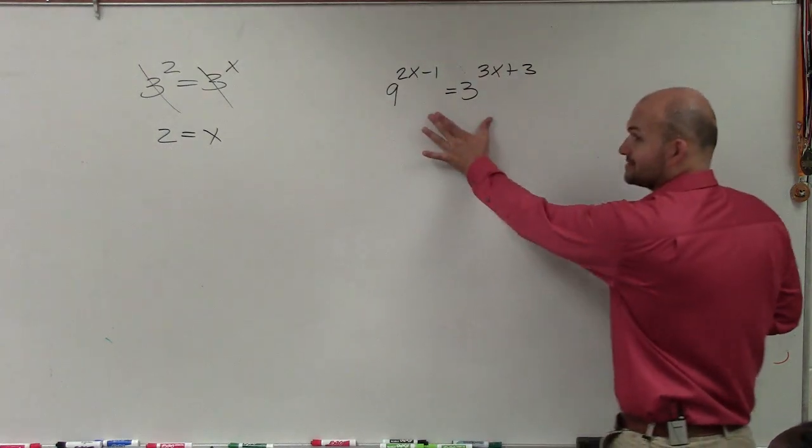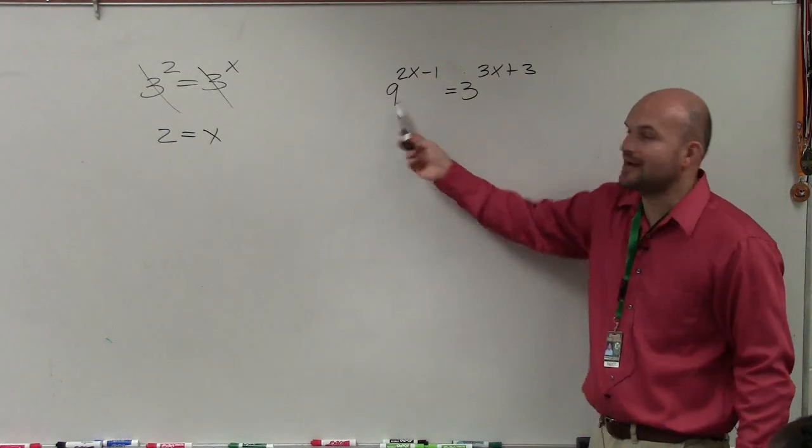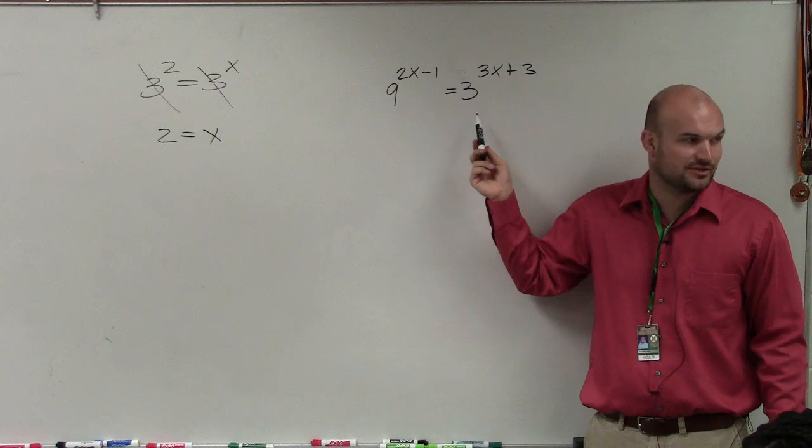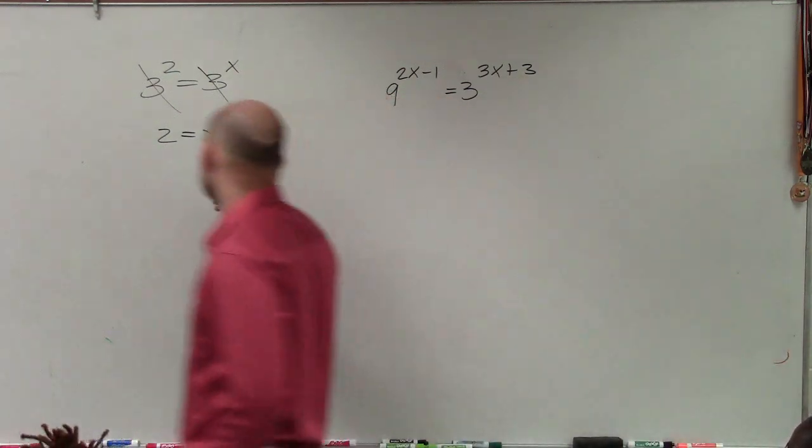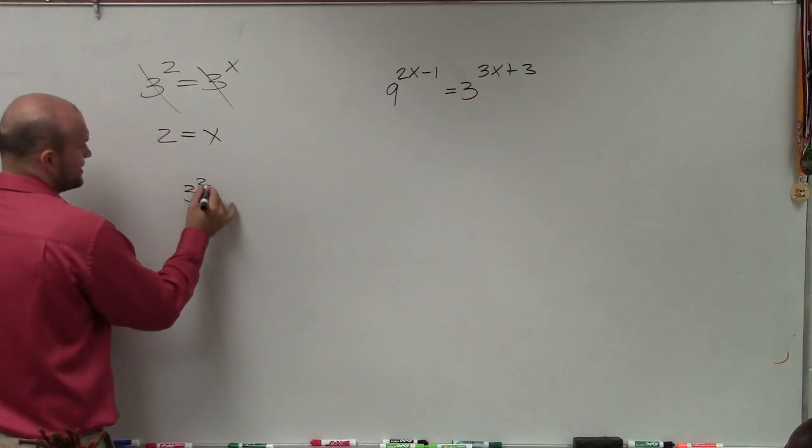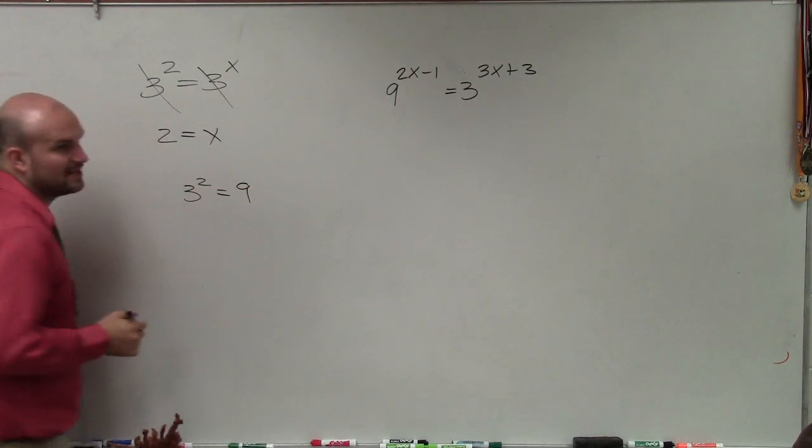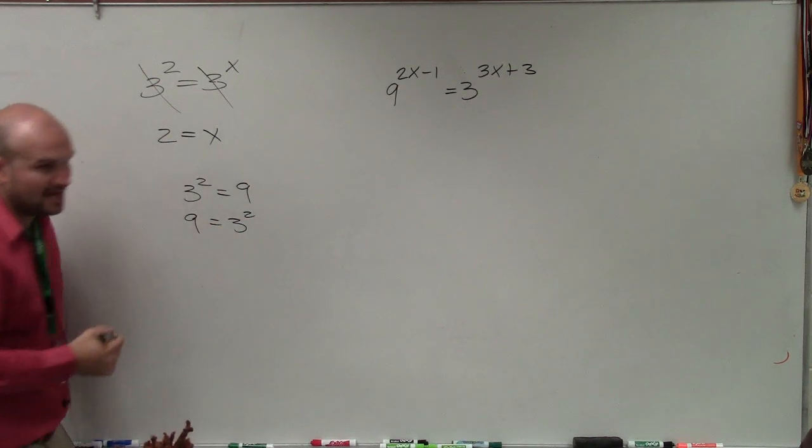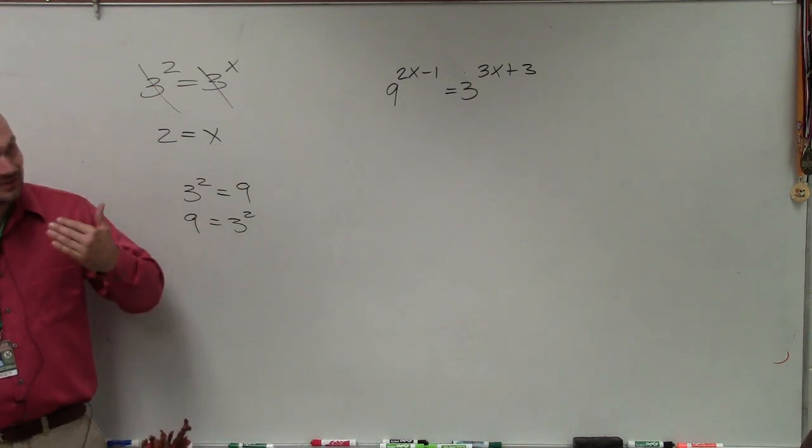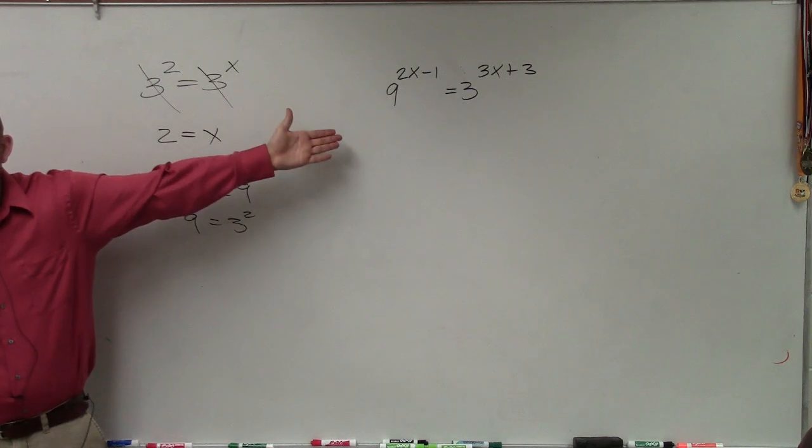So we look at this and you say, well, these don't have the same base though, do they? So we've got a little issue with that. However, is it OK if I write 3 squared is the same thing as 9? Or 9 is the same thing as 3 squared? Could I do that? And the reason why I want to do that is because then they would have the same base. Make sense?